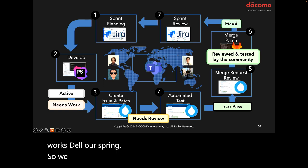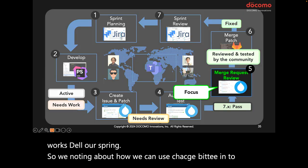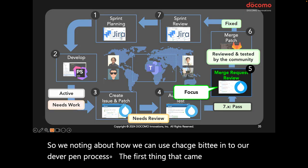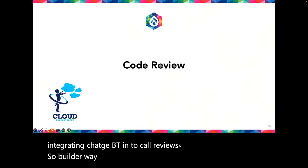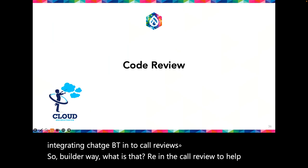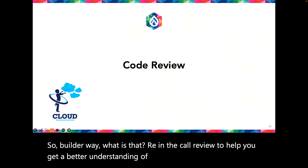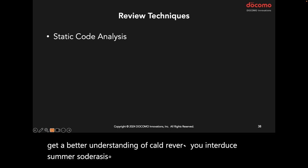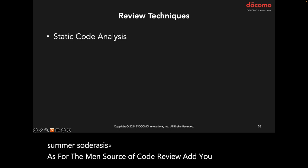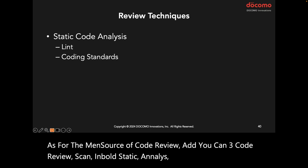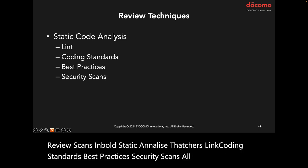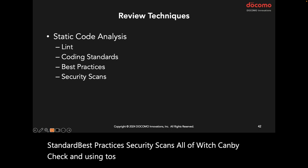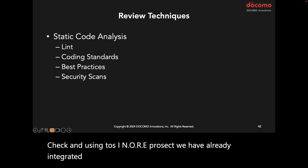When I think about how we can use ChatGPT in our development process, the first thing that came to mind was integrating ChatGPT into code reviews. What exactly is code review? Code reviews can involve static analysis such as lint, coding standards, best practices, and security scans — all of which can be checked using tools. In our project, we have already integrated these tools into our CI pipeline as automated tests.